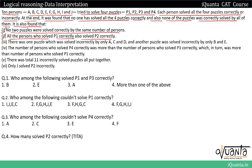Let's read the questions first. Question one: who among the following solved P1 and P3 correctly? Question two: who among the following could not solve P1 correctly? For both questions we need to find which puzzles each person solved correctly or incorrectly. We'll draw a table with puzzles along the rows and people along the columns.